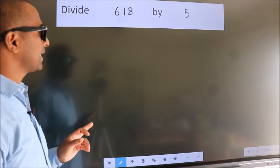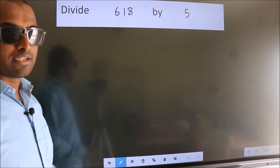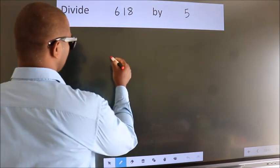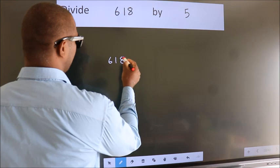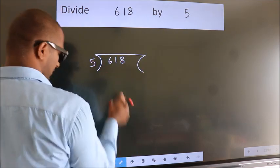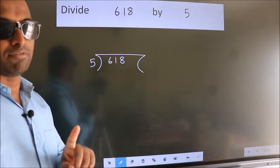Divide 618 by 5. To do this division, we should frame it in this way. 618 here, 5 here. This is your step 1.